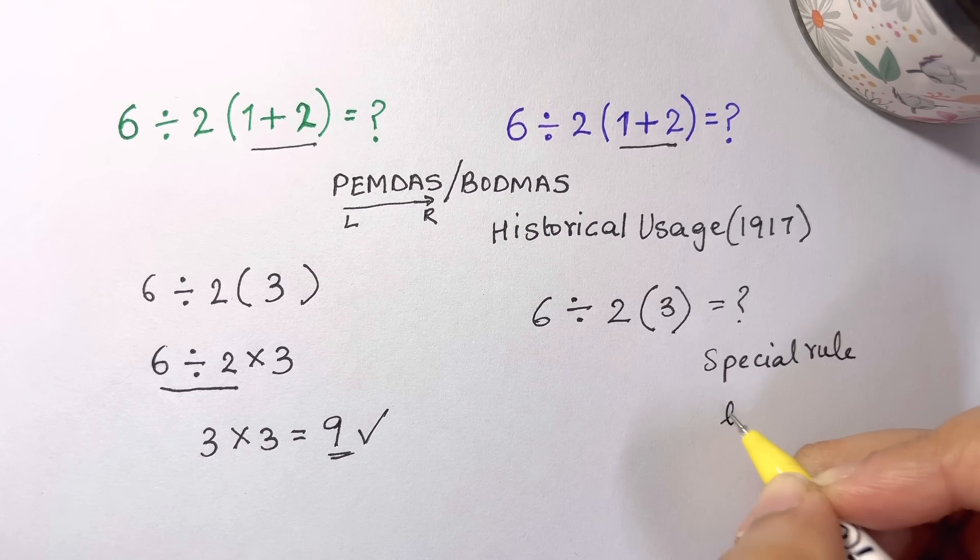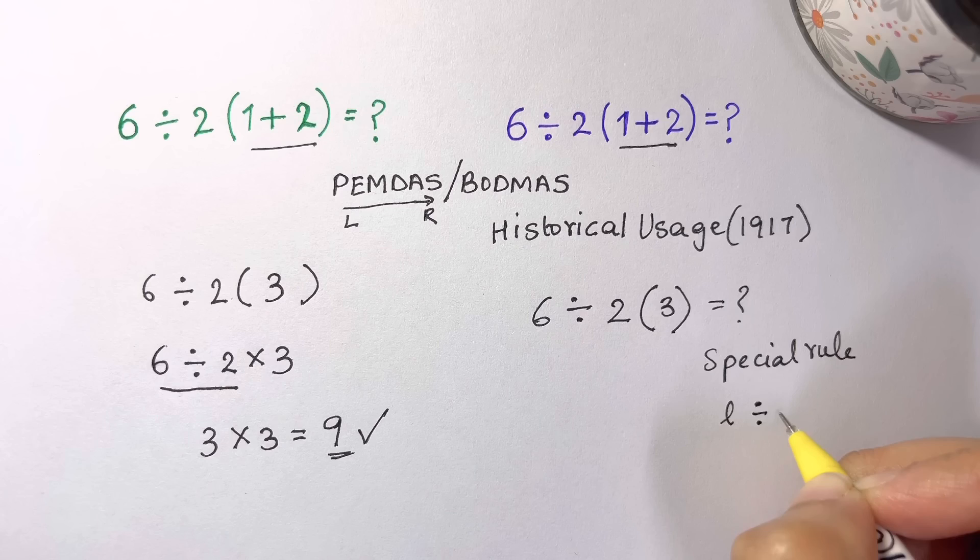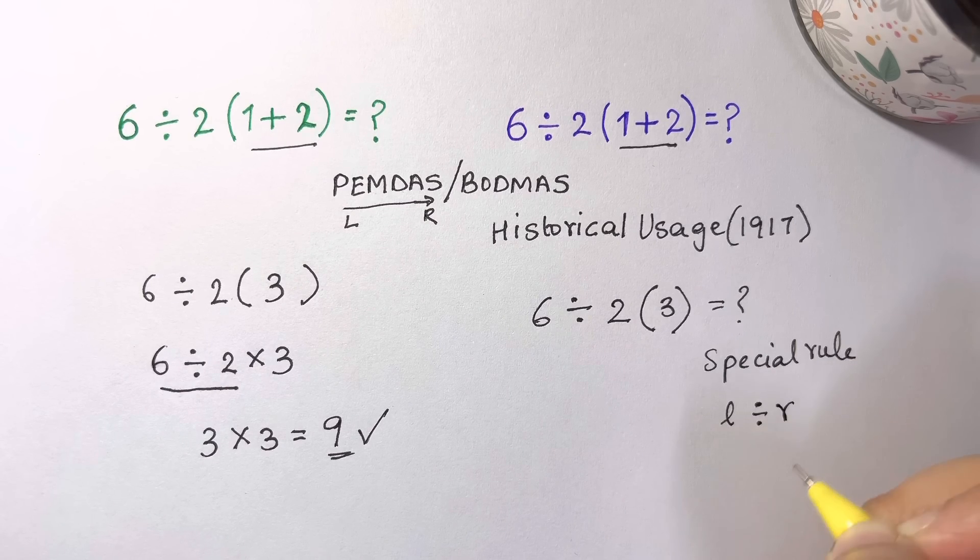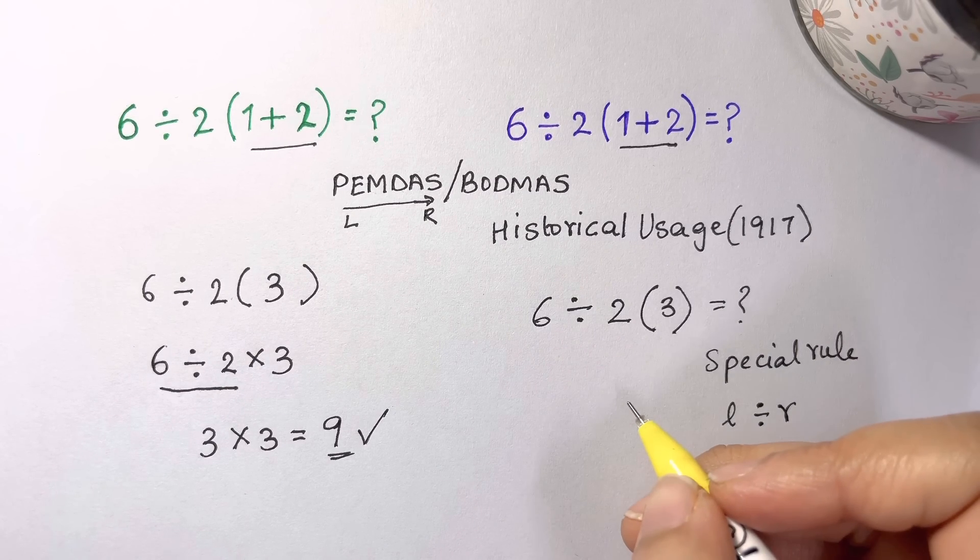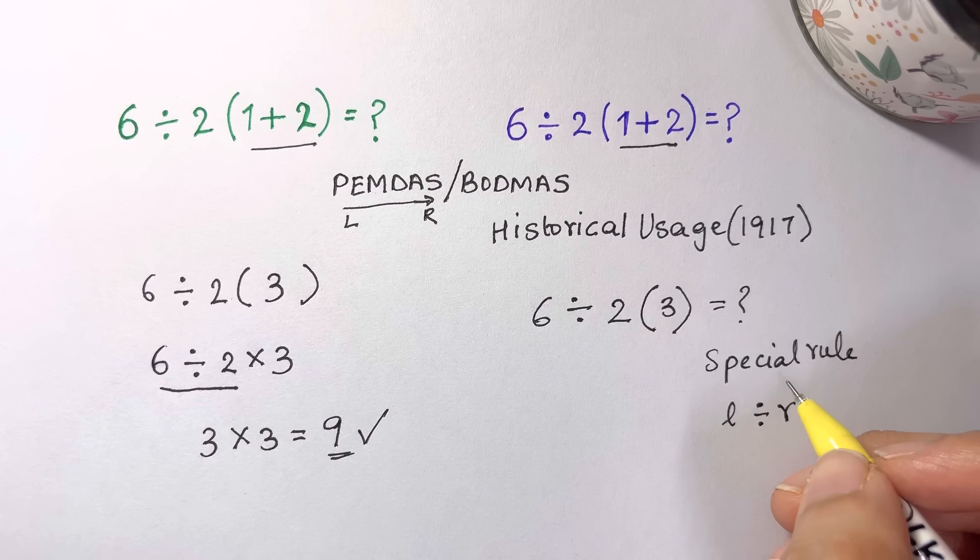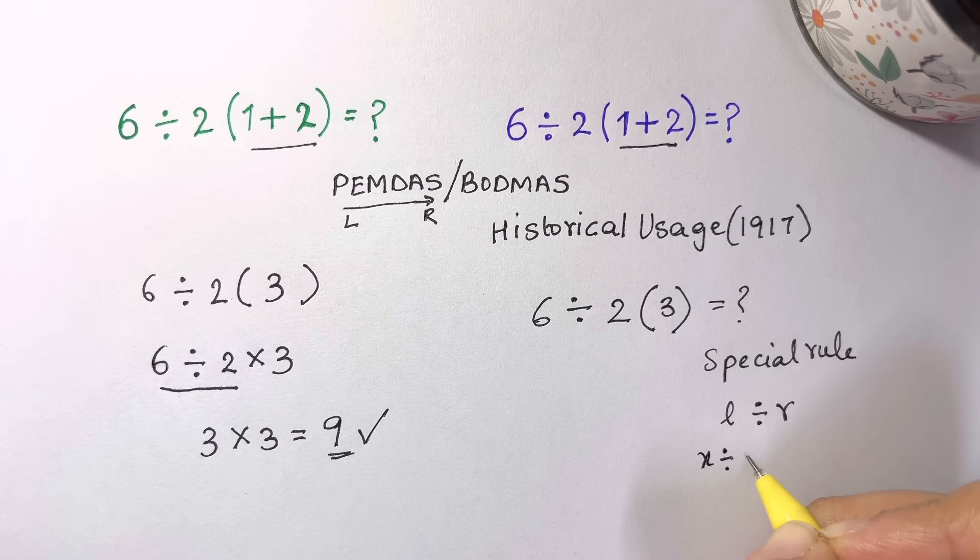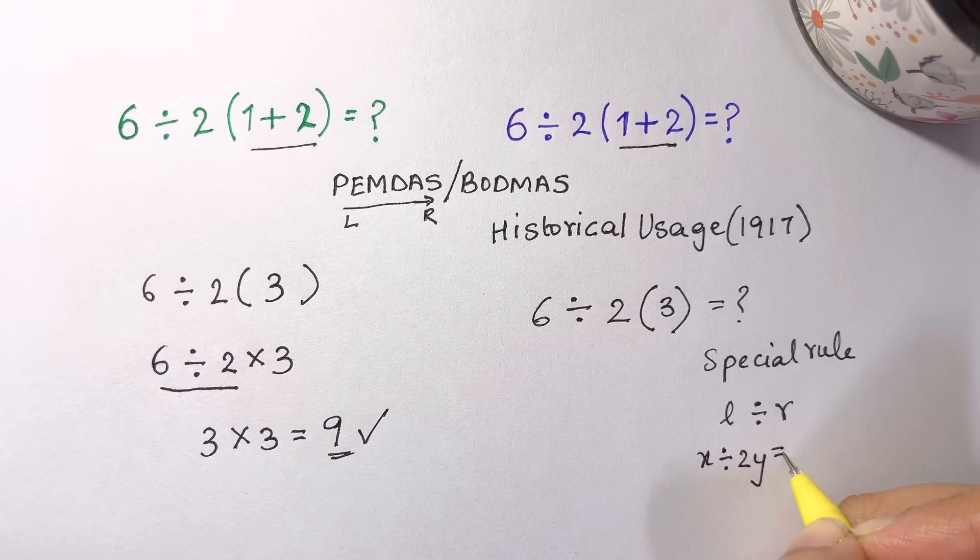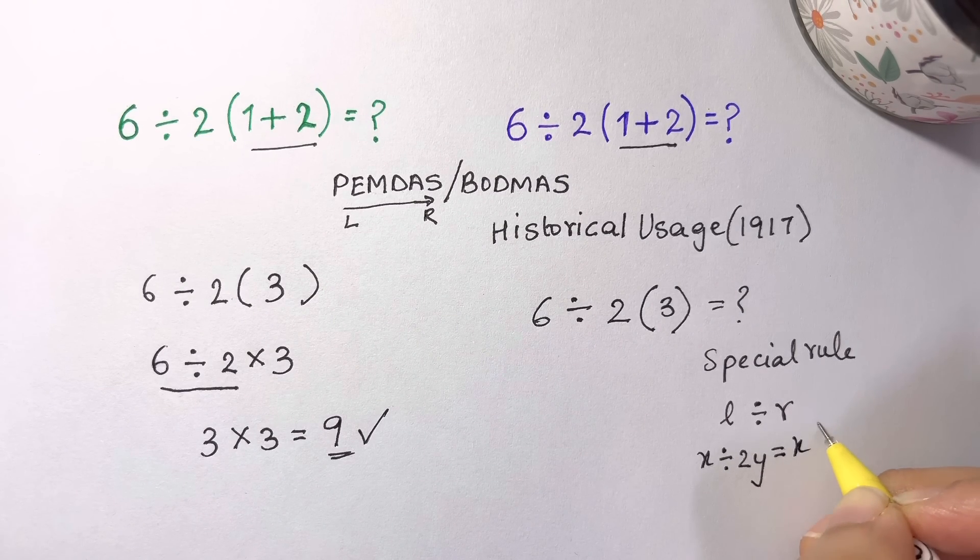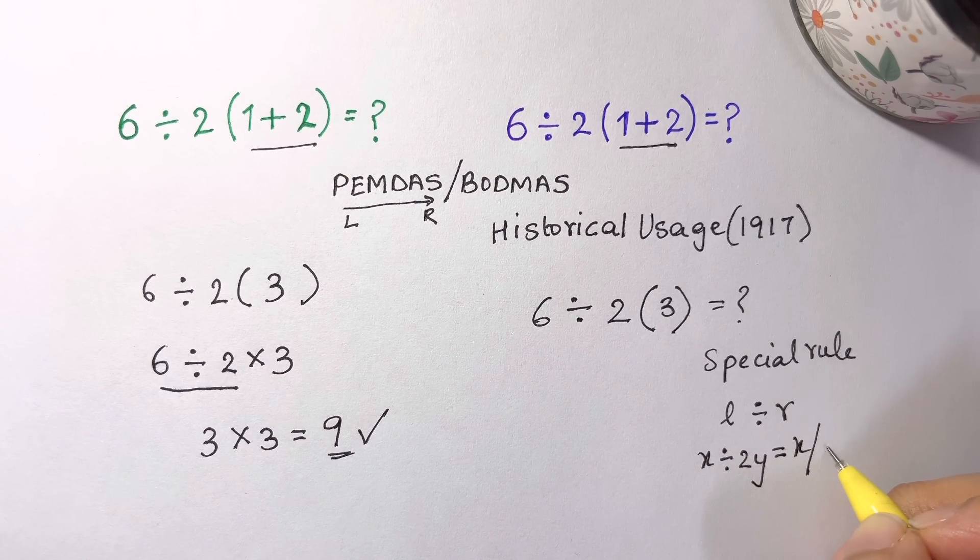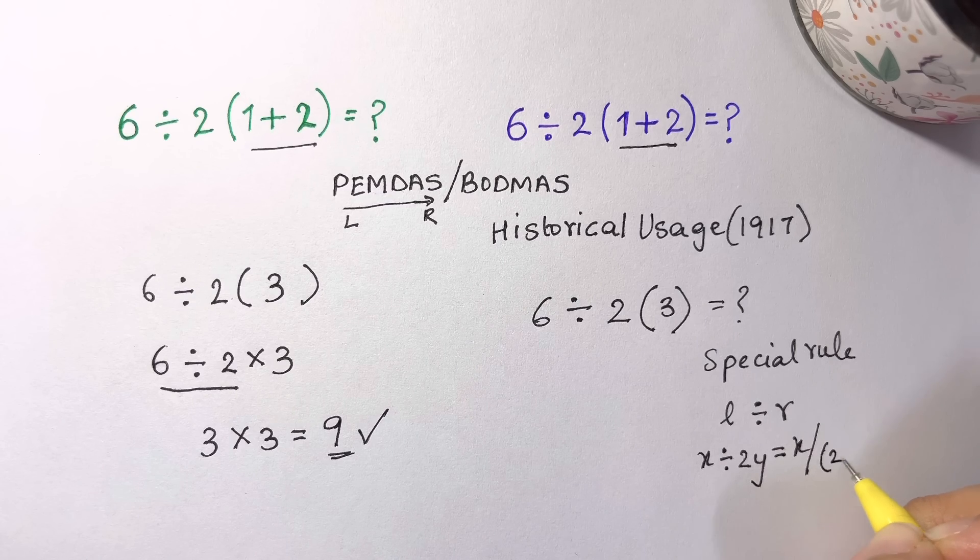The entire product on the left is divided by the entire product on the right. So for example, if a textbook wrote something like x divided by 2y, that's equal to x over the product of the denominator, that's parenthesis 2y.